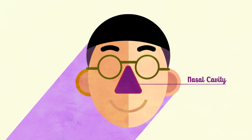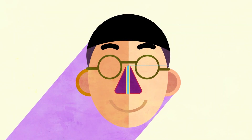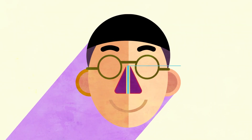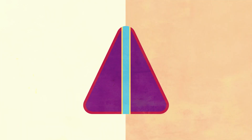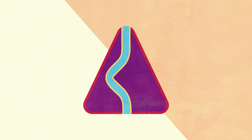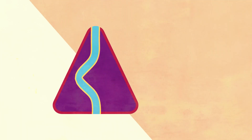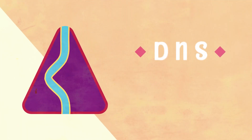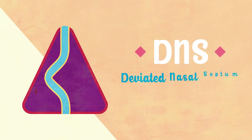Nasal cavity is divided into two by nasal septum. Problems arise when it is not dividing it symmetrically, leading to a condition known as DNS, or deviated nasal septum.